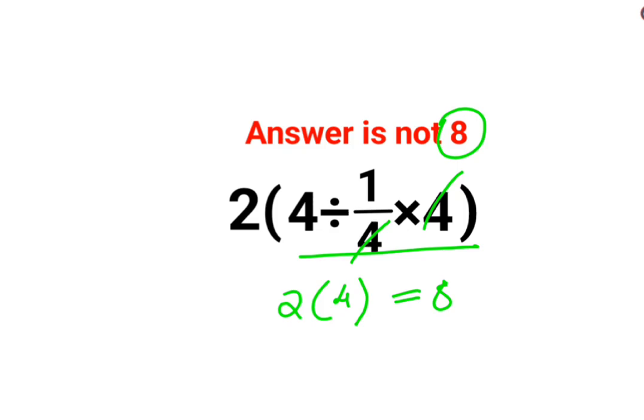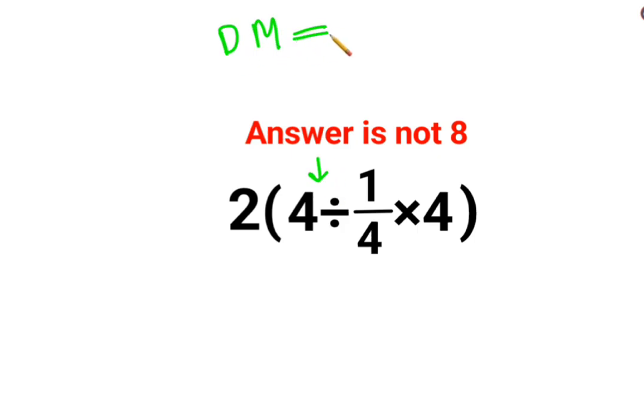Now this my dear friends is incorrect. Let's understand why it is incorrect. Please understand that whenever you have sums like these, division and multiplication hold equal precedence.